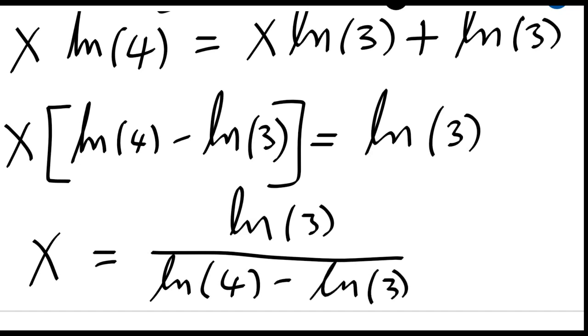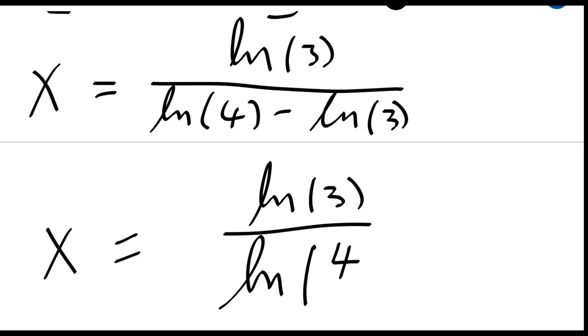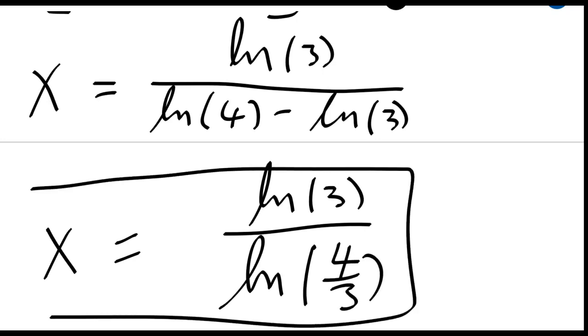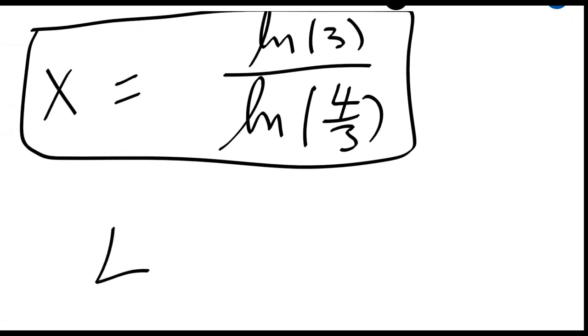If I simplify and write this result correctly, I will have x equal to ln of 3 divided by ln of 4 divided by 3. This is the solution to my equation. Thank you for watching the video, please like the video and subscribe to the channel.